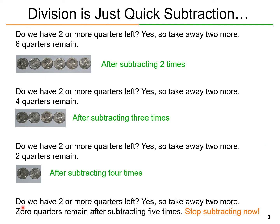Ask yourself: do we have 2 or more quarters left? Yes, we have exactly 2 quarters left. So, take away 2 more quarters again. After we take these 2 quarters away, 0 quarters remain after subtracting 5 times. Because 0 is less than 2, then we stop subtracting.